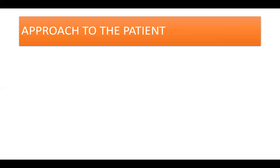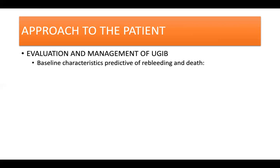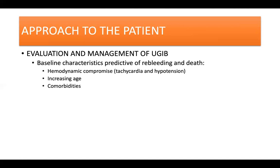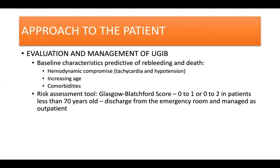In the evaluation and management of upper GI bleeding, baseline characteristics predictive of re-bleeding and death are hemodynamic compromise such as tachycardia and hypotension, increasing age, and comorbidities. An example of a risk assessment tool that can be used is the Glasgow Blatchford score. Discharge from the emergency room without inpatient management has been suggested for patients with a Glasgow Blatchford score of 0 to 1, or 0 to 2 among patients less than 70 years old.